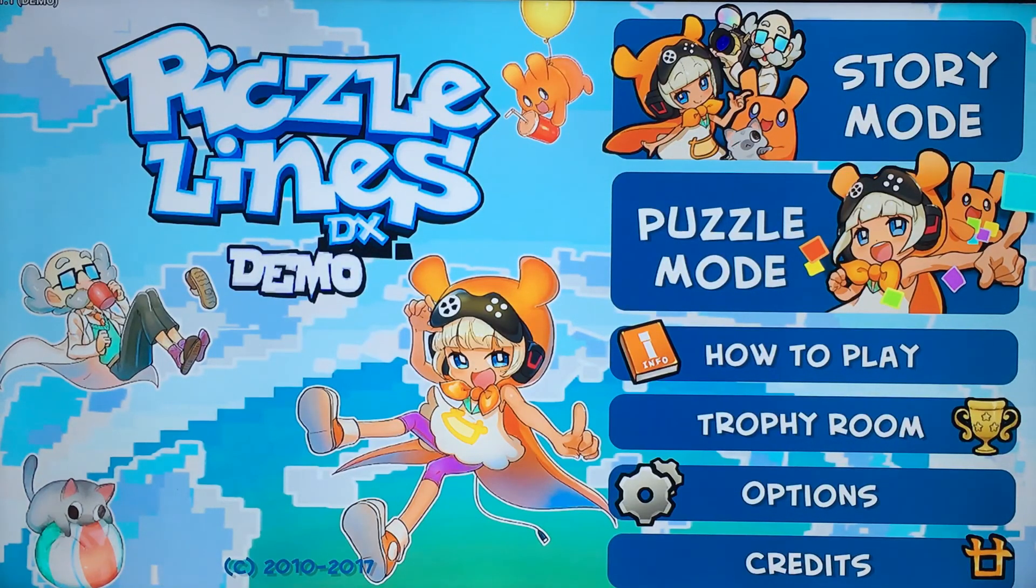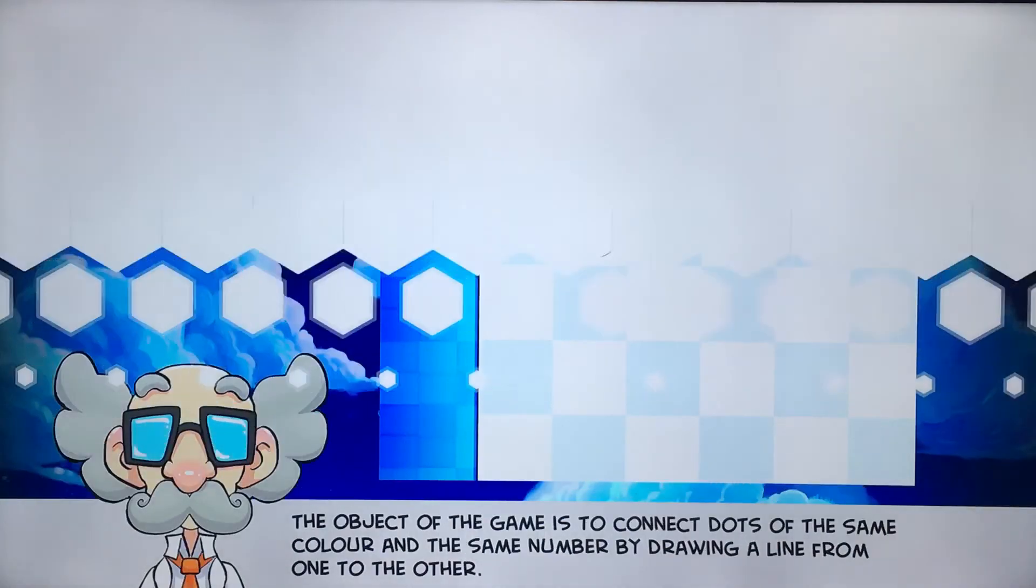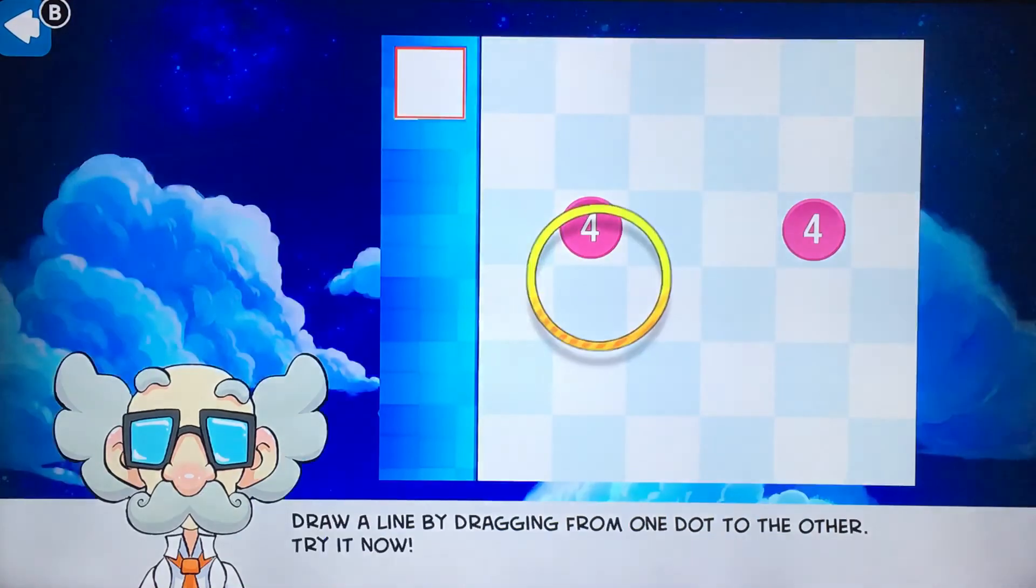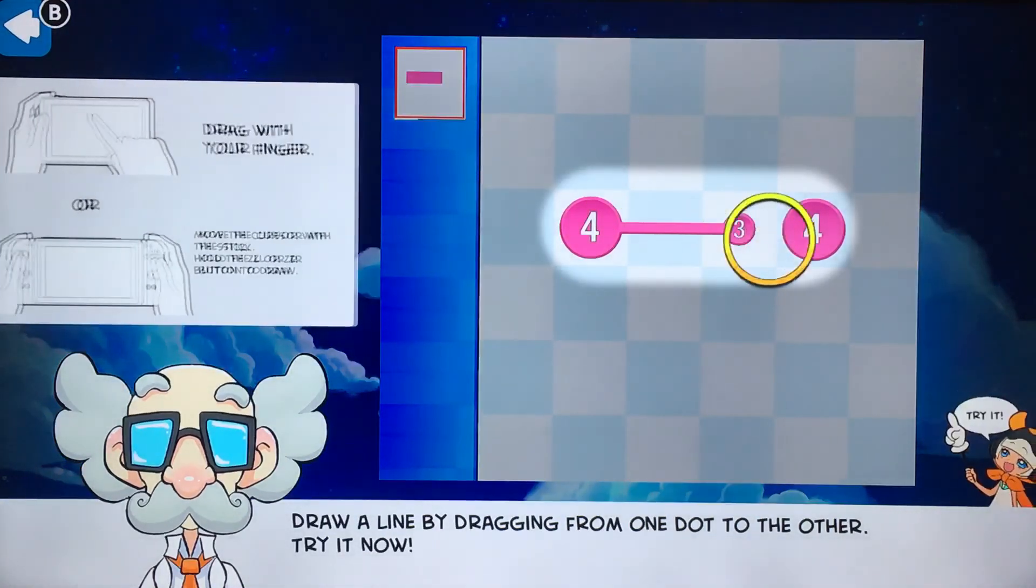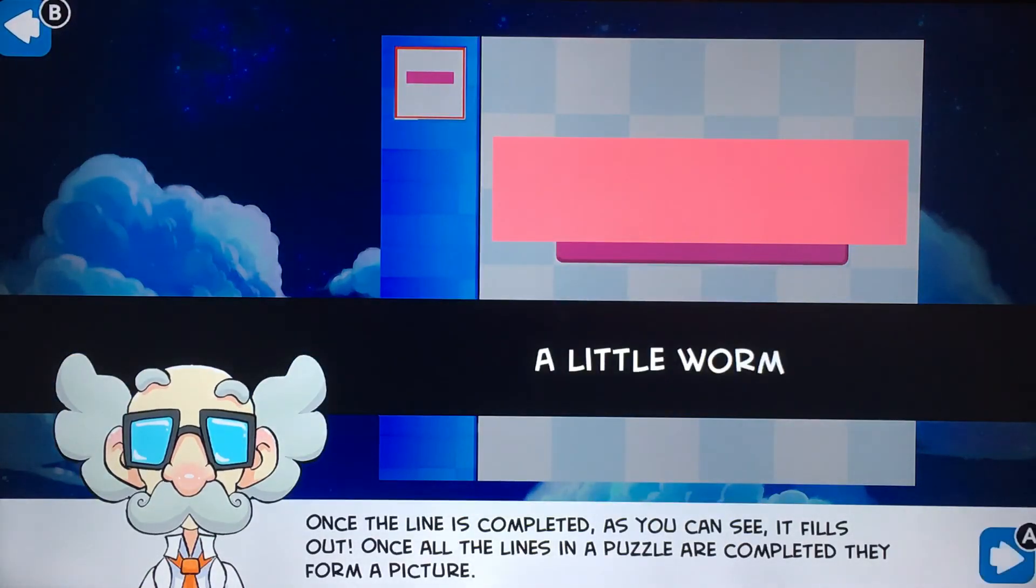Hey guys, welcome back to another video. Today we're back with Laco with Pixel Lines DX. Let's go into the story mode. The object of the game is to connect dots of the same color and the same number by drawing a line from one to another. There we go, so yeah it's one of those games. It's literally just like a mobile app.